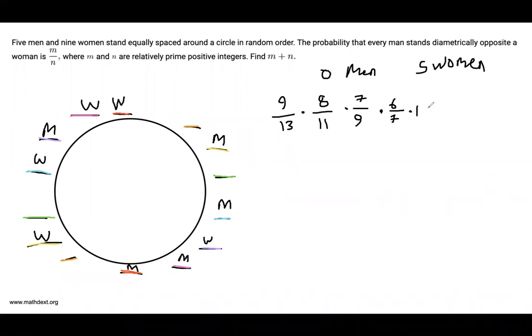And so this is our final probability that every man stands diametrically opposite a woman because we can just place the other four women anywhere and it won't matter. And this product turns out to be, well, I can cancel out a 7, I can cancel out a 9, and you end up with 48 over 243.